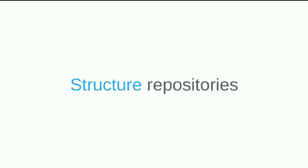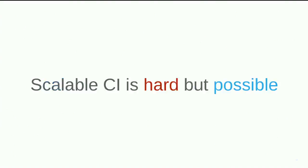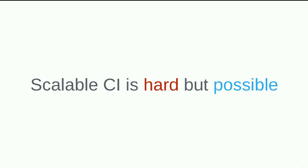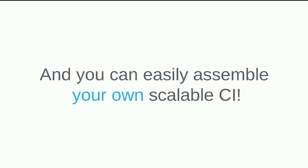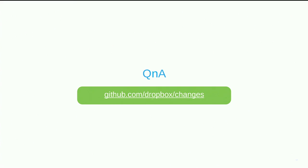The last thing I wanted to touch on is being able to structure your repositories. At Dropbox we have a monolithic code base that is actually spread out over multiple different repositories. There's a lot of debate around how repositories should be structured, but if we structure it the right way we can leverage that in controlling our workloads. There are a lot of tools out there for doing continuous integration — it's hard to get them to work at scale — but it is possible if you use the web paradigm. We did it using Changes, and all of our work is open sourced at github.com/Dropbox/Changes. Feel free to take a look and put together your own scalable CI for your own use cases.